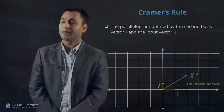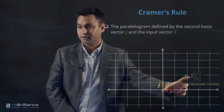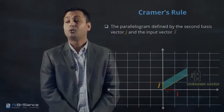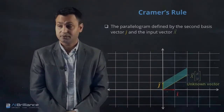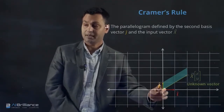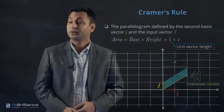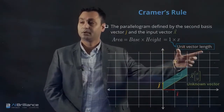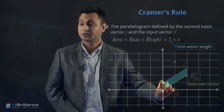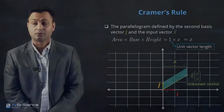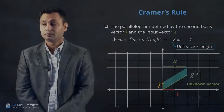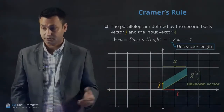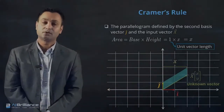Now consider the parallelogram defined by the second unit vector J and the unknown vector X. The area of this parallelogram can be found similarly: the base is one unit length (since J is a unit vector), and the height is the X-coordinate of the unknown vector. So the area equals one times X. Before transformation, we considered the areas of both parallelograms formed by the unit vectors and the unknown vector.